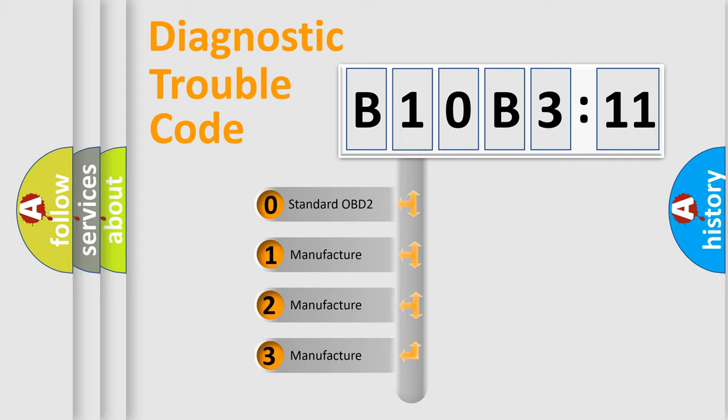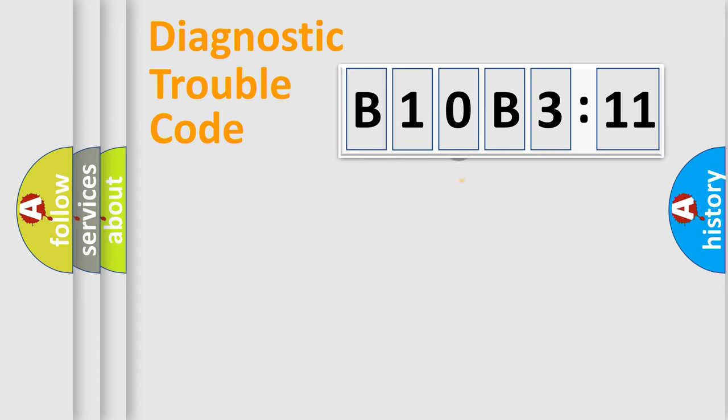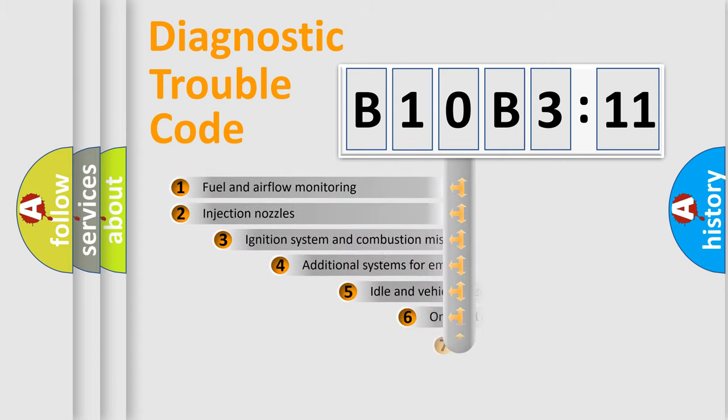If the second character is expressed as zero, it is a standardized error. In the case of numbers 1, 2, or 3, it is a more specific expression of the car-specific error.